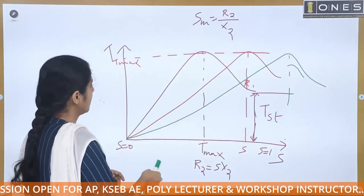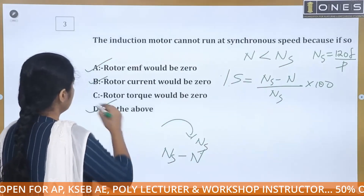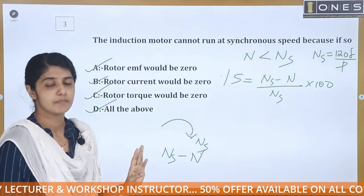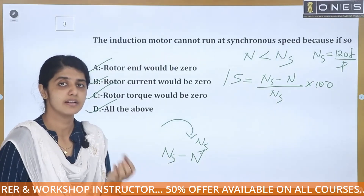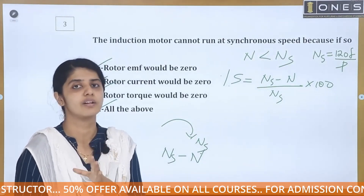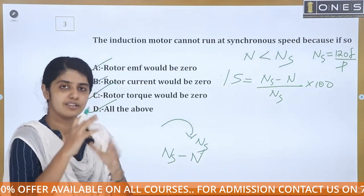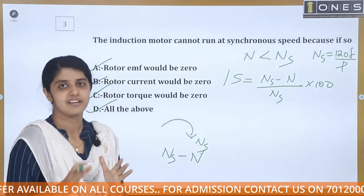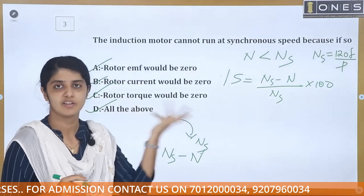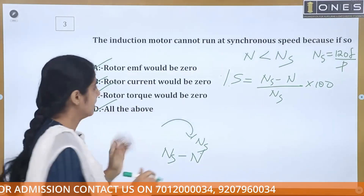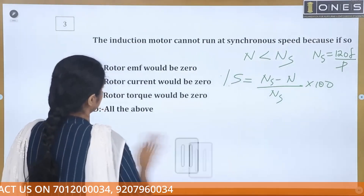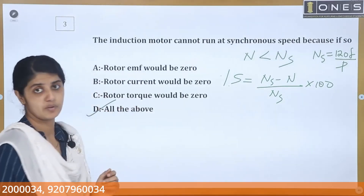With zero torque, the motor cannot sustain rotation at synchronous speed and would decelerate. Therefore, the answer is: all of the above — rotor EMF would be zero, rotor current would be zero, and rotor torque would be zero.